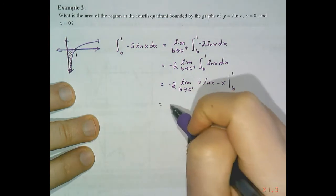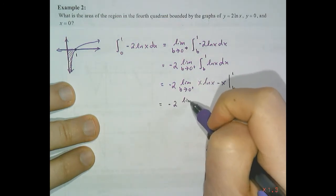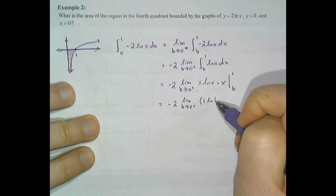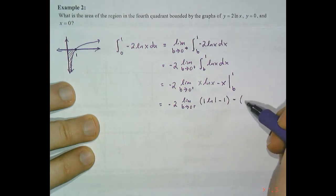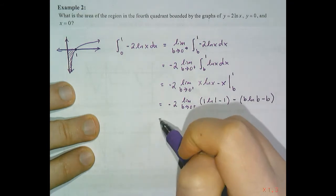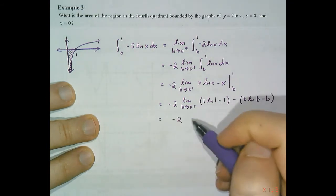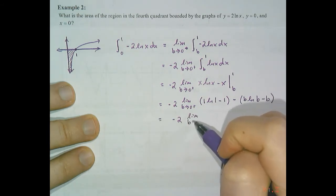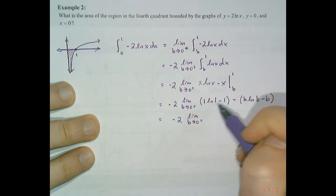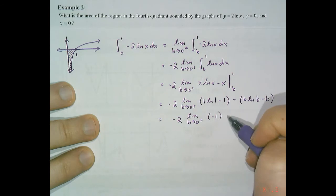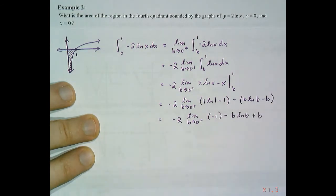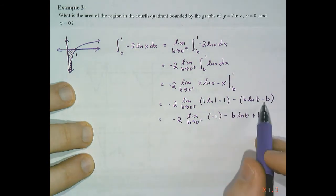Since ln(1) equals zero, we have zero minus one, which is negative one, minus b ln(b) plus b. The negative two multiplied through gives: negative two times (negative one minus b ln(b) plus b). Simplifying: the negative two times the negative one gives two, and the limit as b approaches zero of just b is zero, leaving us with two minus the limit as b approaches zero from the right of b ln(b).